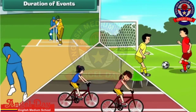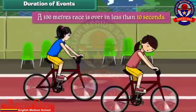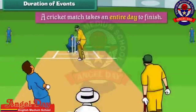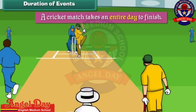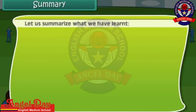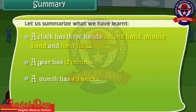Different events take different times for completion. A hundred meters race is over in less than 10 seconds. A football match takes 2 hours to complete. A cricket match takes an entire day to finish. Let us summarize what we have learned: a clock has 3 hands — second hand, minute hand and hour hand. A year has 12 months, a month has 4 or 5 weeks, and there are 7 days in a week.